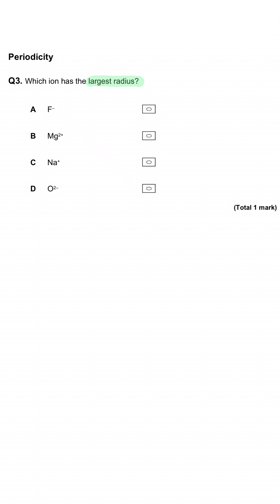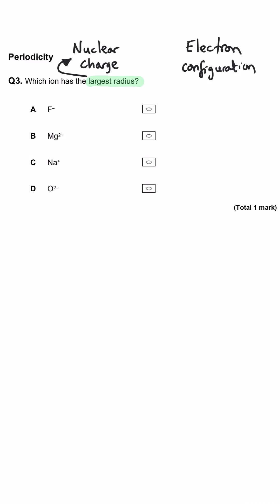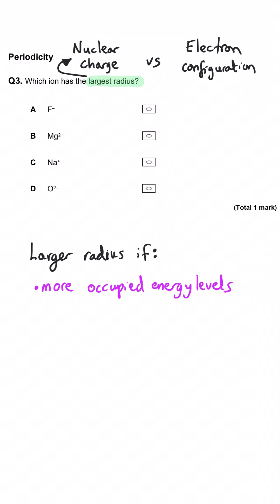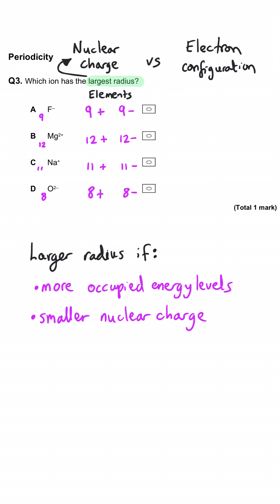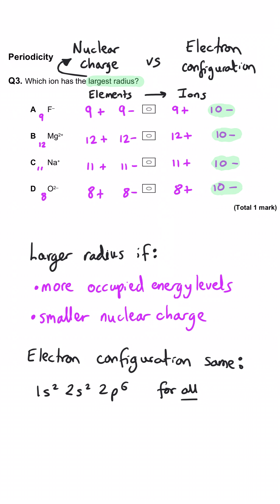Which ion has the largest radius? The radius of an ion is determined by the balance between the nuclear charge and the occupied electron shells. More occupied electron shells means a bigger ion; a smaller nuclear charge also means a bigger ion. The atomic numbers of fluorine, magnesium, sodium and oxygen are 9, 12, 11 and 8. All of these ions have 10 electrons and so the same electron configuration, so the size is down to nuclear charge. The one with the largest radius has the smallest nuclear charge — that's oxide, with only eight protons. So D is correct.